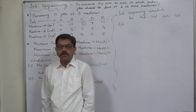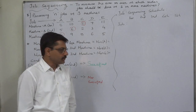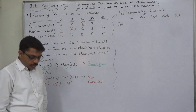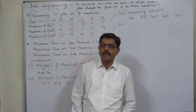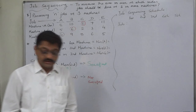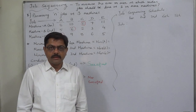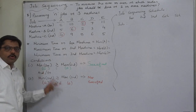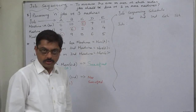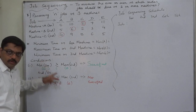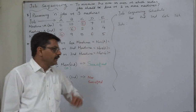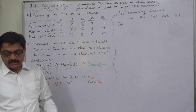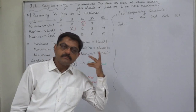If we want to use Johnson's rule, we should have only two machines, but in this case there are three machines. So first of all, we have to convert this problem into a problem involving two machines. This is possible, but we have to check whether any one or both of two conditions are satisfied. If any one or both of these two conditions are satisfied, then only we can convert this data into a case having two machines and then use Johnson's algorithm.